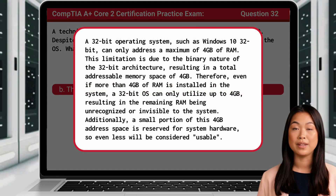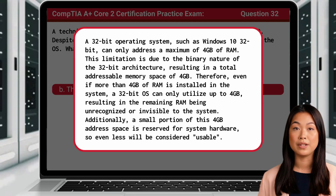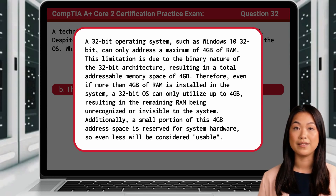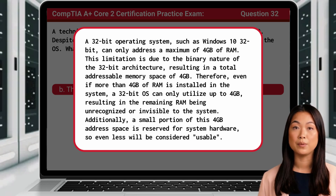A 32-bit operating system, such as Windows 10 32-bit, can only address a maximum of 4GB of RAM. This limitation is due to the binary nature of the 32-bit architecture, resulting in a total addressable memory space of 4GB. Therefore, even if more than 4GB of RAM is installed, a 32-bit OS can only utilize up to 4GB, with the remaining RAM being unrecognized or invisible to the system. Additionally, a small portion of this 4GB address space is reserved for system hardware, so even less will be considered usable.